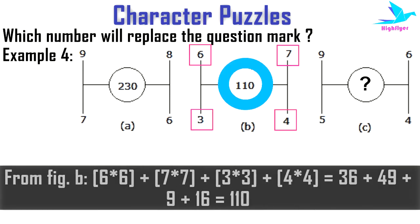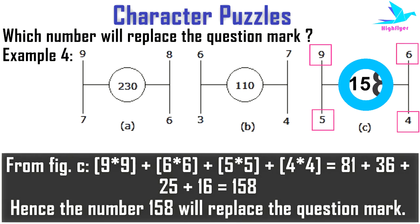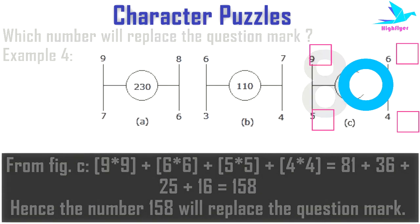Similarly, in figure B: 6² + 7² + 3² + 4² = 36 + 49 + 9 + 16 = 110. So in figure C the required number will be 9² + 6² + 5² + 4² = 81 + 36 + 25 + 16 = 158.